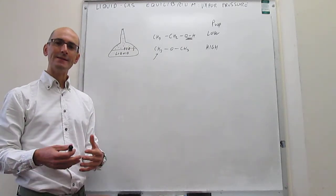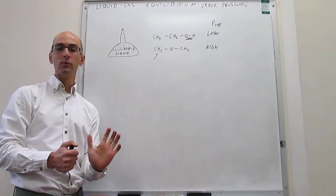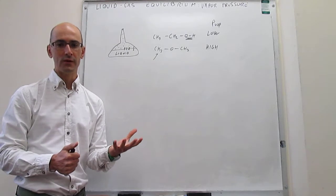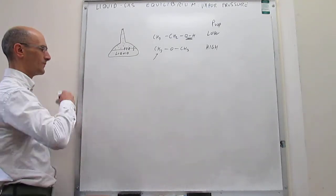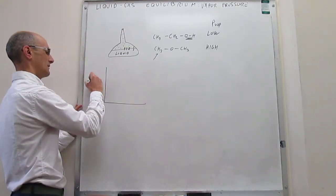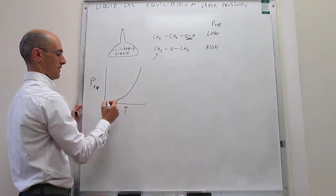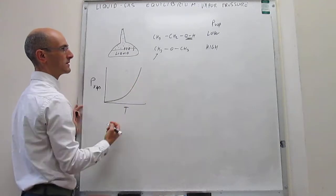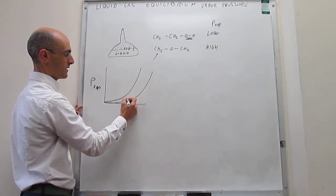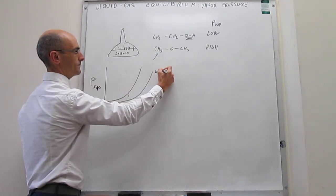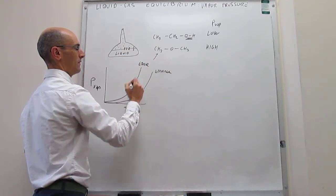If you increase the temperature of the liquid, there is more thermal motion and a larger ability to break the interactions within the liquid, leading to a larger vapor pressure. So there is a positive correlation between the vapor pressure of a liquid and the temperature — the hotter the liquid, the larger the vapor pressure. That relationship is generally exponential. Suppose this curve is dimethyl ether and this one is ethanol; at room temperature, ethanol will have a much lower vapor pressure than dimethyl ether, as anticipated.